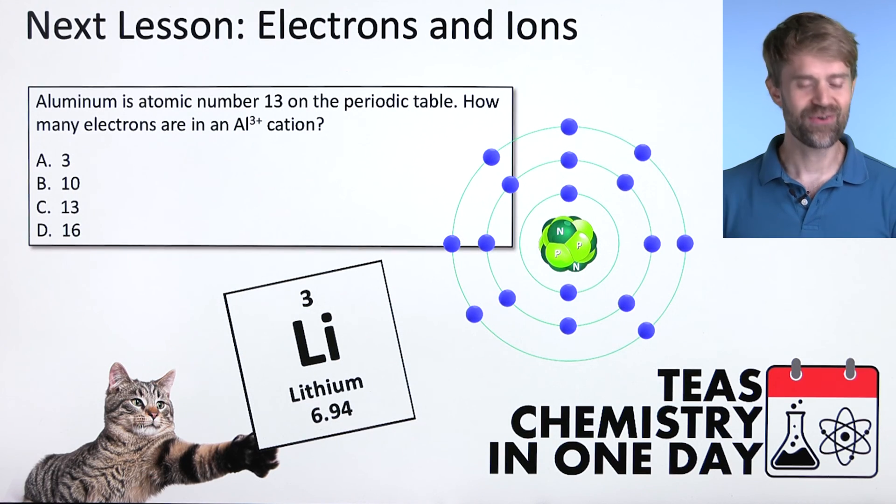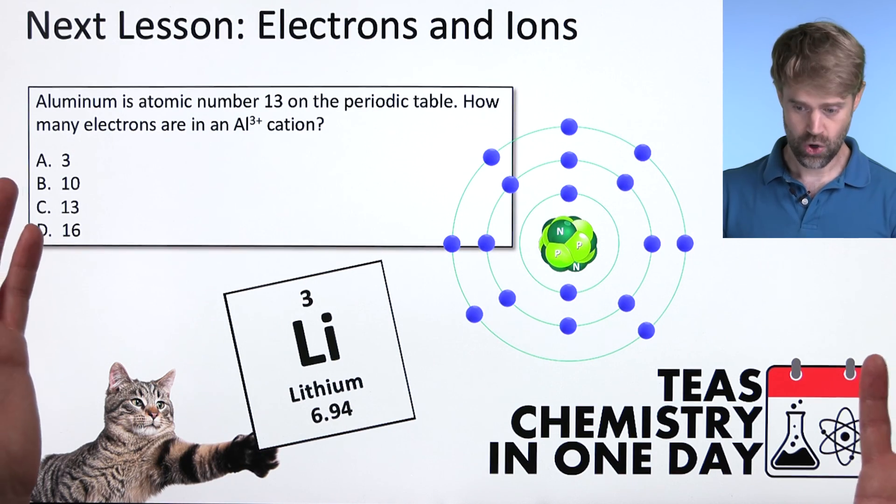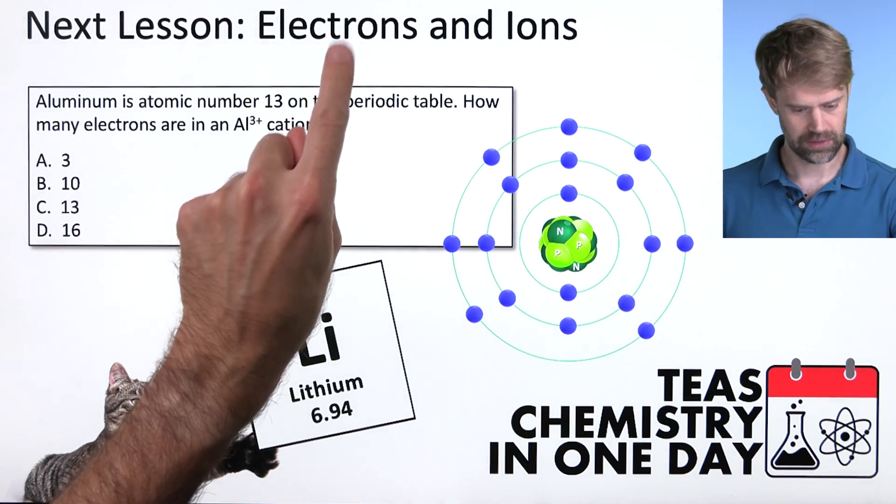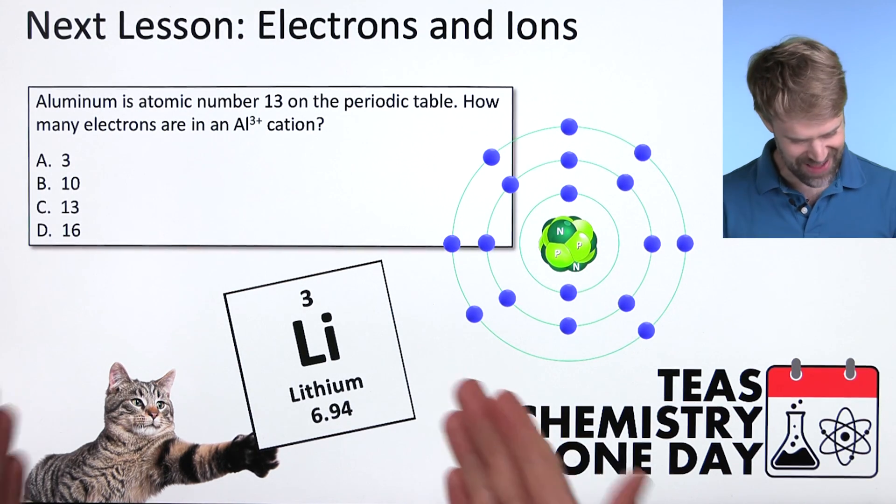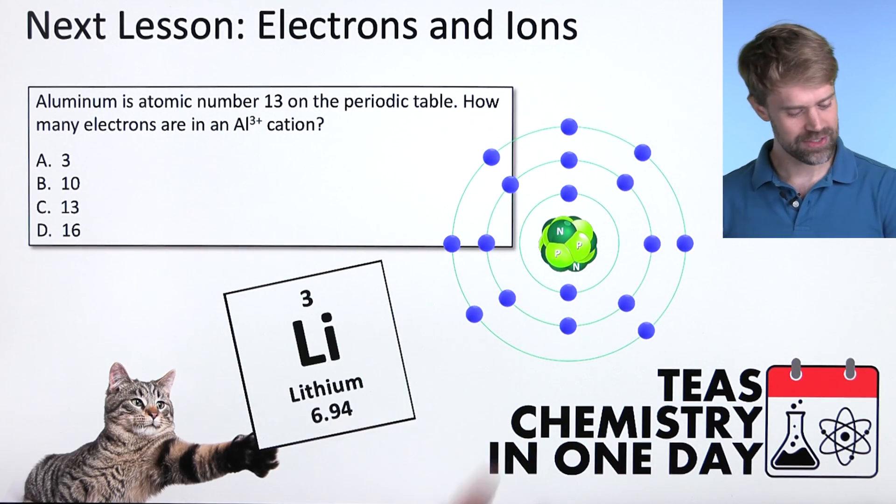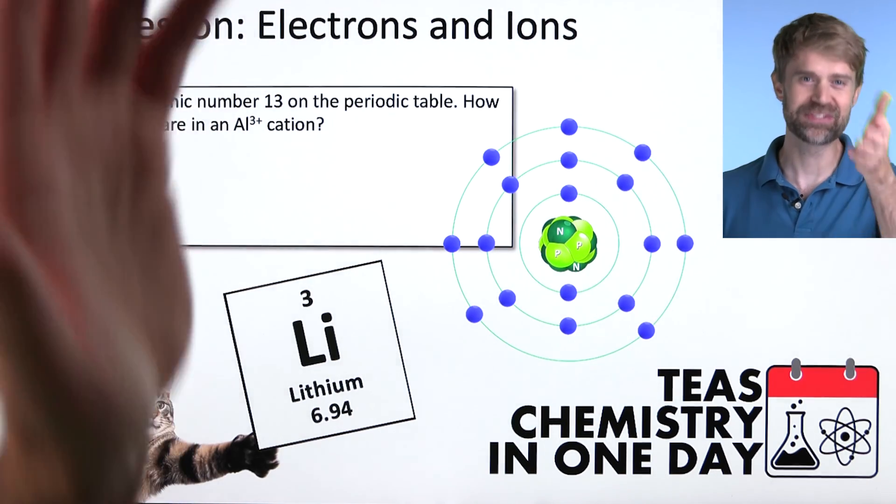Okay, so that wraps it up for protons and atomic number. In the next lesson, we'll look more closely at electrons, ions, and ionization. And we'll introduce you to our pet cat and see how this helps you remember some important vocabulary for the TEAS. We'll see you there.